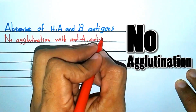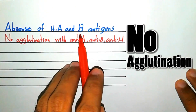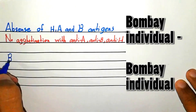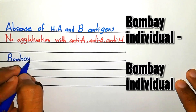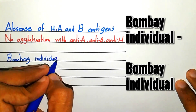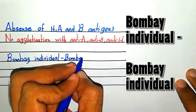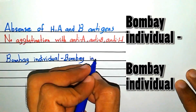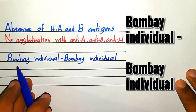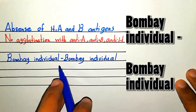A person who has the Bombay blood group type can donate to and receive red blood cells from only another individual who is also identified to have the Bombay blood group.